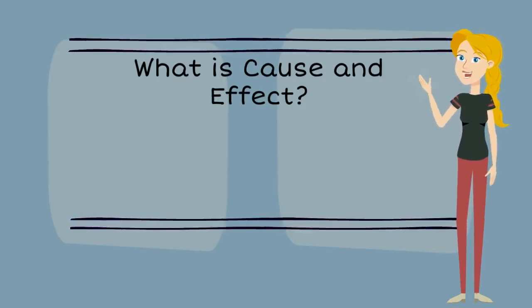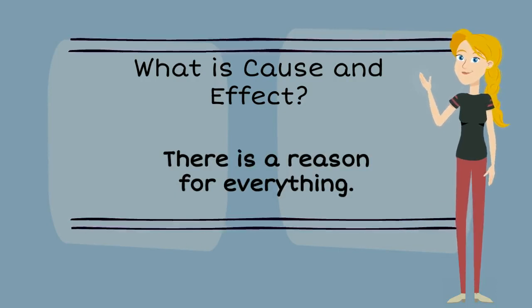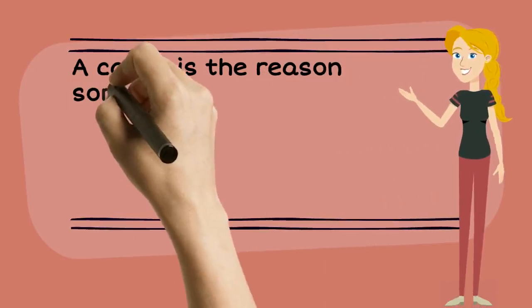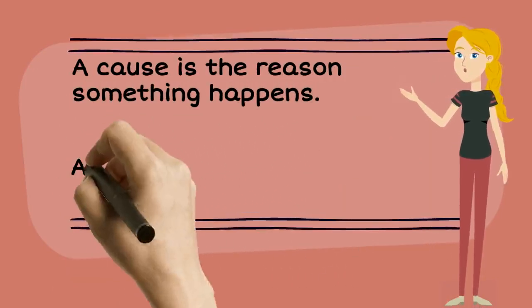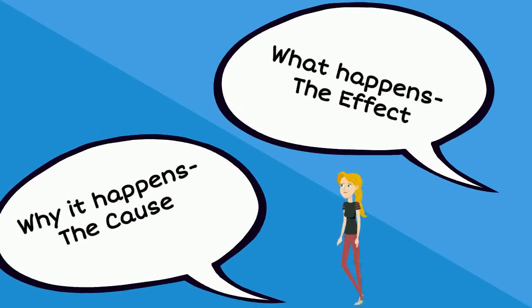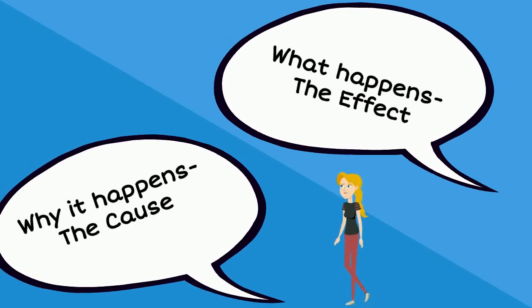So, what does cause and effect mean? In fact, there is a reason for everything that happens. A cause is the reason that something happens, whereas an effect is what happens as a result. In other words, what happens is the effect and why it happens is the cause.